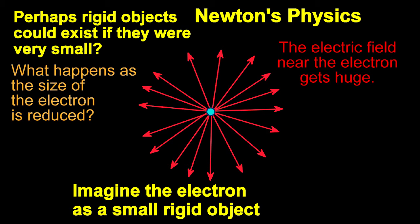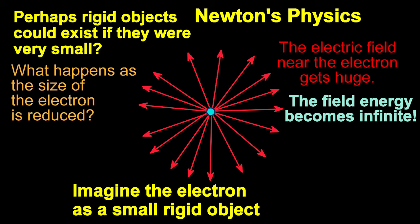Since the field contains energy, the energy around the electron becomes greater and greater. Early physicists calculated that the energy would be infinite if the electron size was zero. If the size was not zero, then you get the ugly position of an electron having a structure, which is not observed.